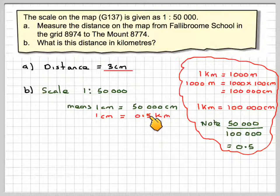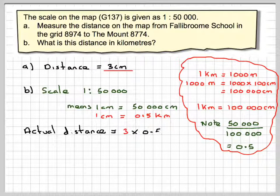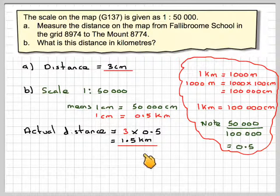Or another way to think about it, this is half of what that is, therefore it must be half a kilometer. So the actual distance is going to be equal to the distance measured on the map, which is 3, times 0.5 kilometers, which gives me 1.5 kilometers.